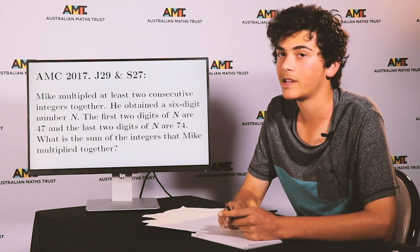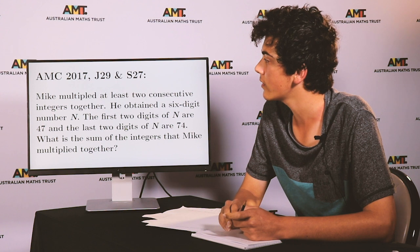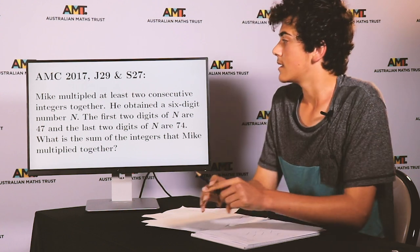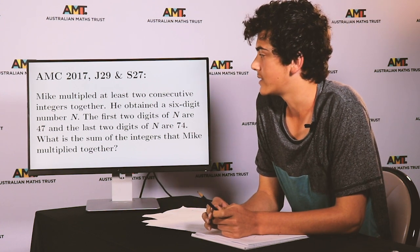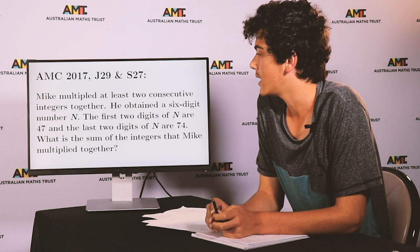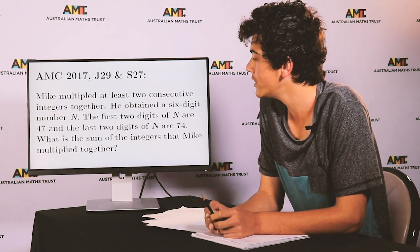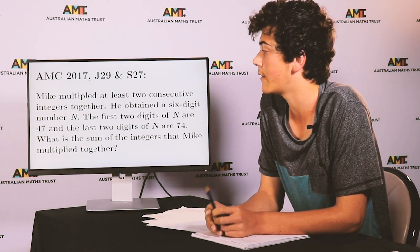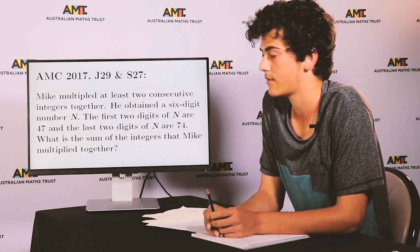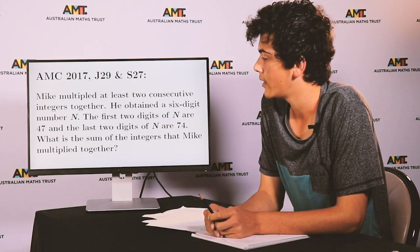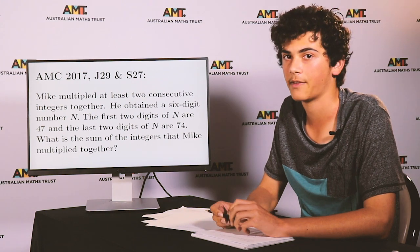And finally we have a problem from both the junior and senior papers. Mike multiplied at least two consecutive integers together. He obtained a six-digit number N. The first two digits of N are 47 and the last two digits of N are 74. What is the sum of the integers that Mike multiplied together?